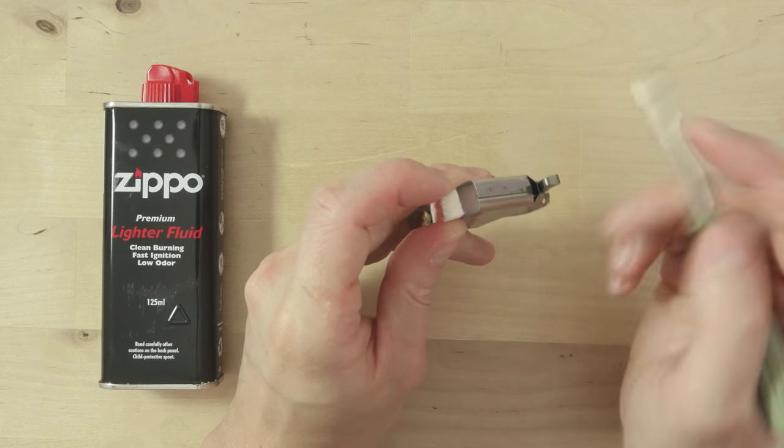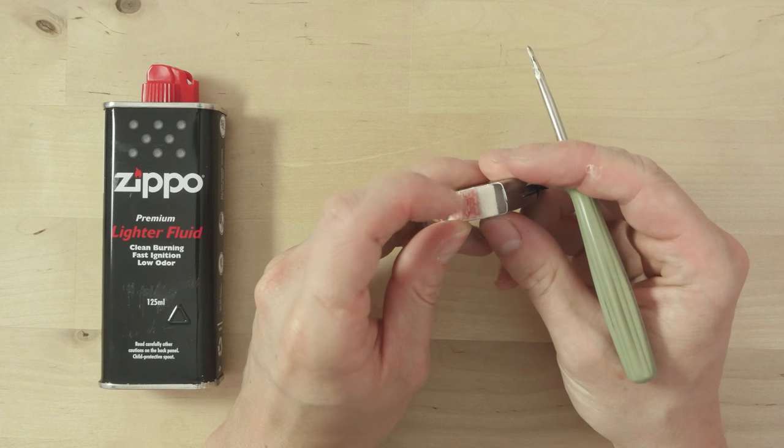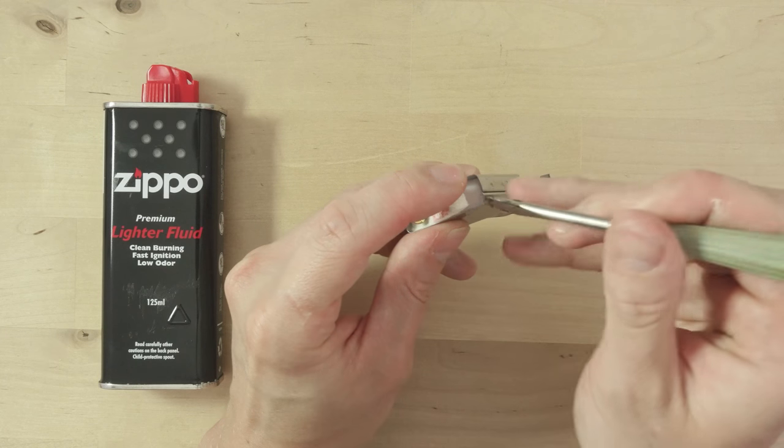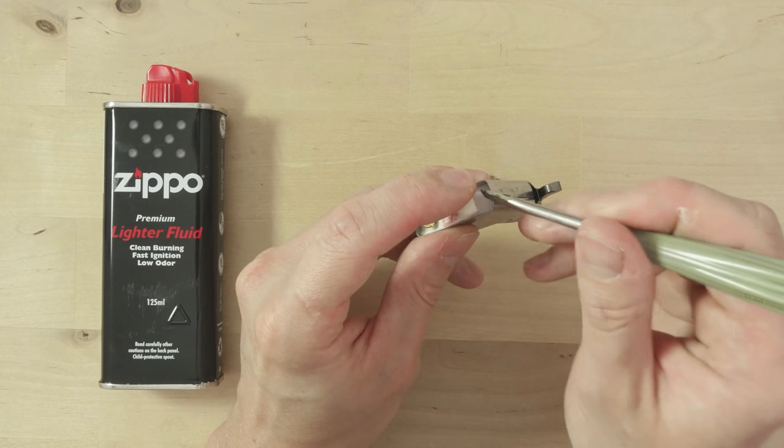Inside, you have some cotton and room for your lighter fluid. We're going to pour the lighter fluid in here.